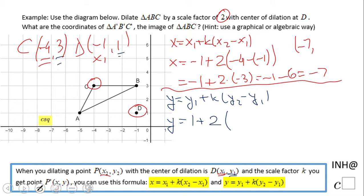the y coordinate of point C, which is 3. So: y = 1 + 2(3 - 1) = 1 + 2(2) = 1 + 4 = 5. That is the final answer for point C: (-7, 5).